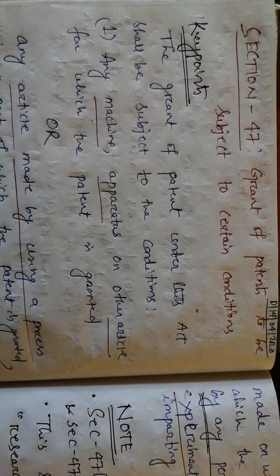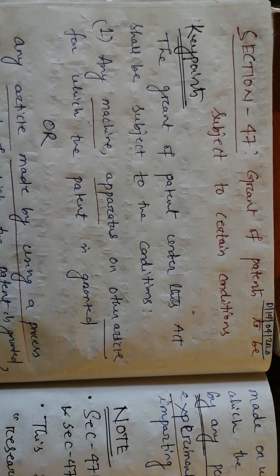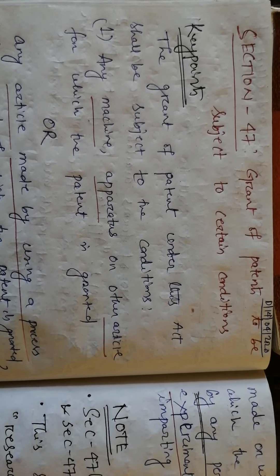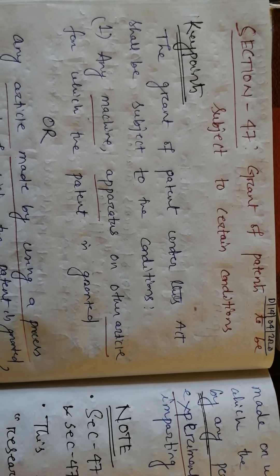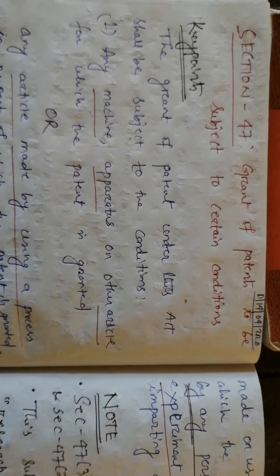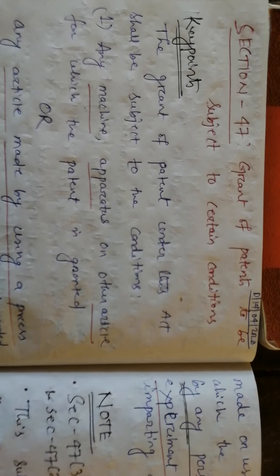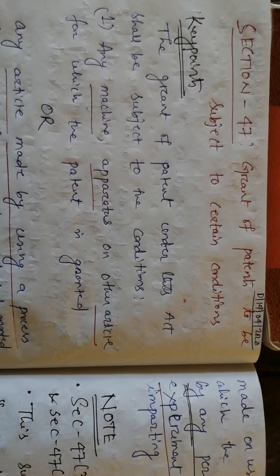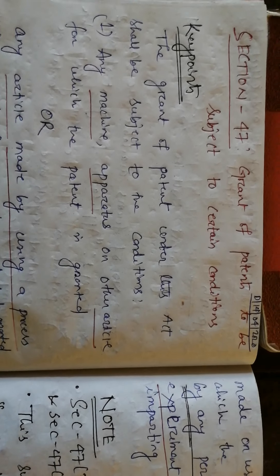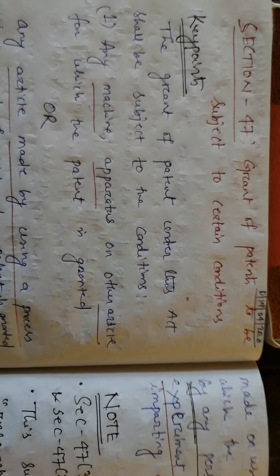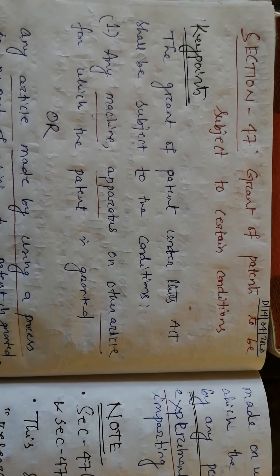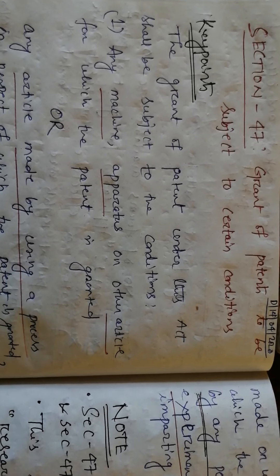Good morning friends. Today I will discuss Section 47 and Section 48 of the Patents Act 1970. Section 47 has the title 'Grant of Patents to be subject to certain conditions,' which simply means that patents are granted under certain conditions.